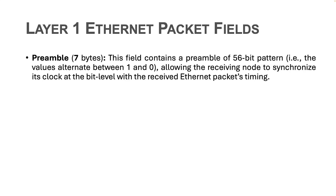An Ethernet packet starts with a 7-byte preamble. This field contains a 56-bit pattern where the values alternate between 1 and 0, allowing the receiving device to synchronize its clock at the bit level with the received packet's timing.